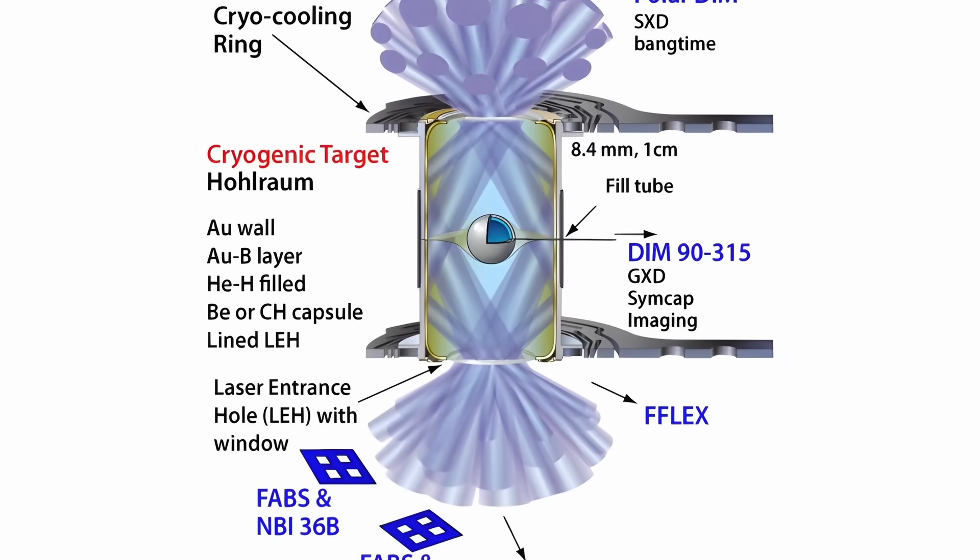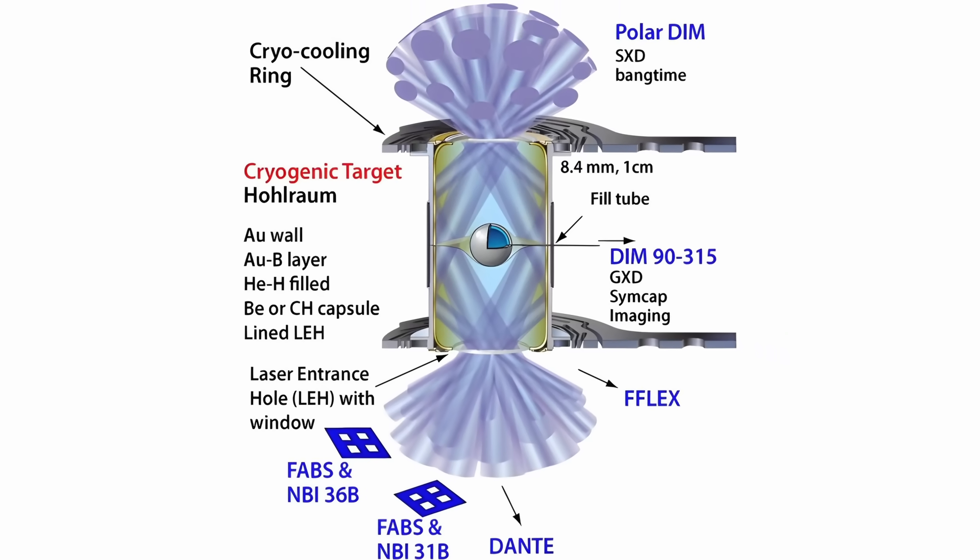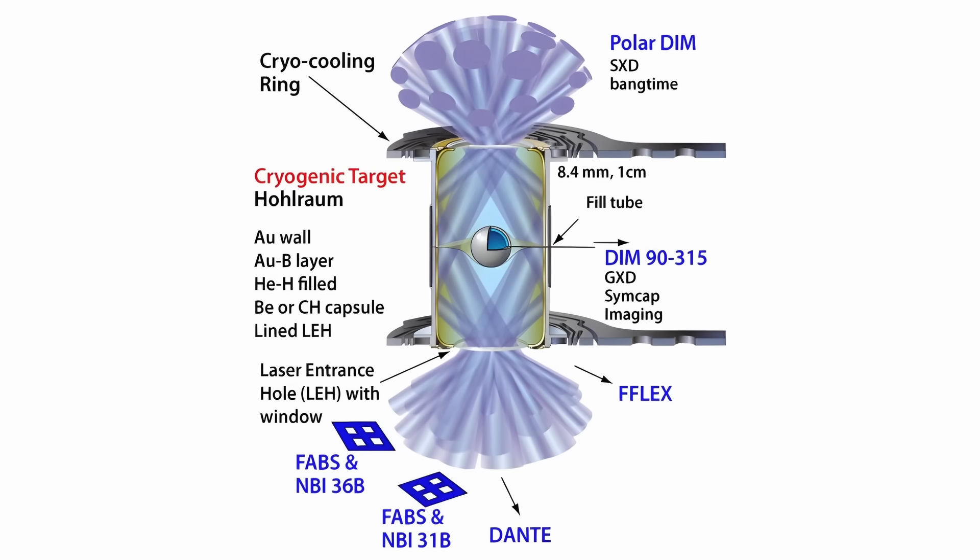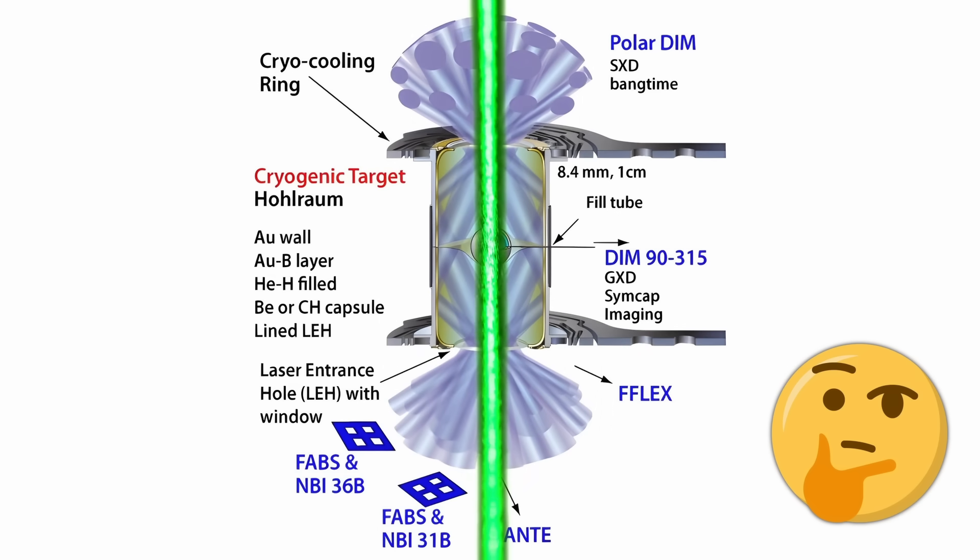This sounds very promising, but of course there's a reason why the NIF uses this complicated indirect drive with the gold reflections to get the X-rays. It's because it's reasonably robust, and not so super sensitive to small asymmetries in the shots and pellet. If you skip this step, you need to be super careful about getting everything in the right place.